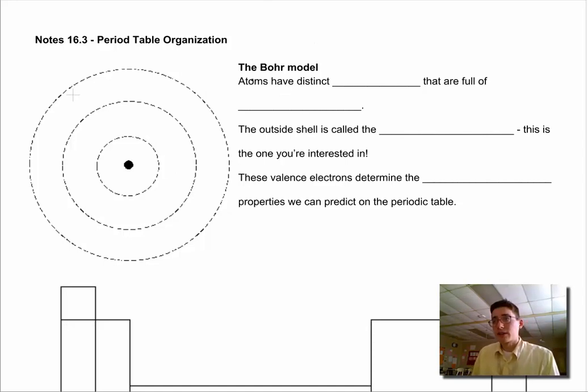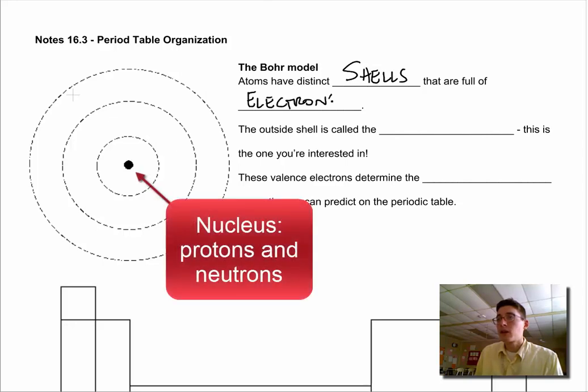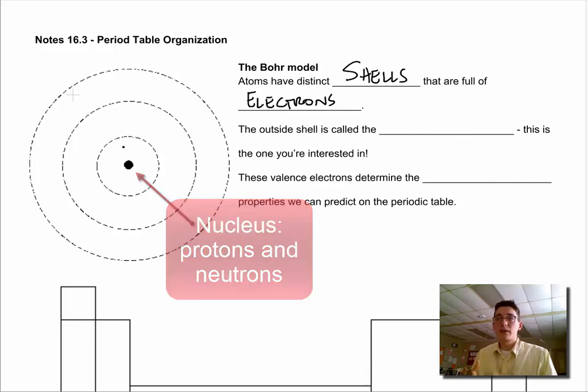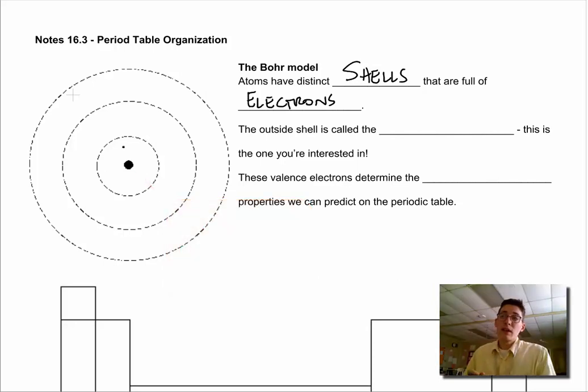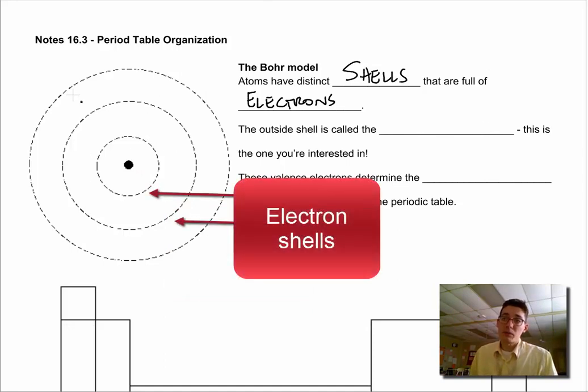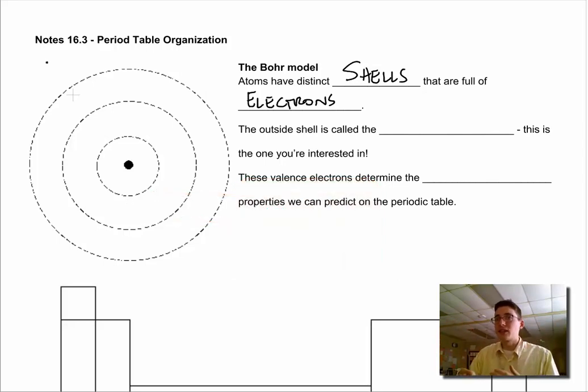So what the Bohr model says is that atoms have distinct shells that are full of electrons. So in this model, the nucleus right here in the center has the protons and the neutrons, and that's where all the mass of the atom is. It's very dense, and around the outside, we have what Bohr called shells. They go in layers around the outside of the atom. Think like a jawbreaker. So there's different layers of colors of candy around the core. The atomic model we're using works similarly.